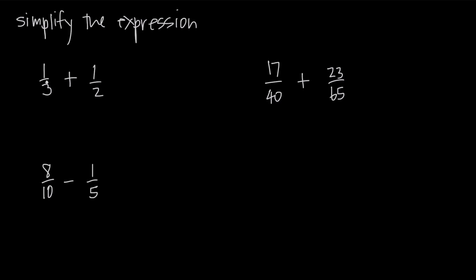In this first example, we have 1/3 plus 1/2. The denominator of this fraction is 3, and the denominator of this fraction is 2. But we need the denominators to be the same in order to add the fractions together. Until the denominators are the same, we can't do that.